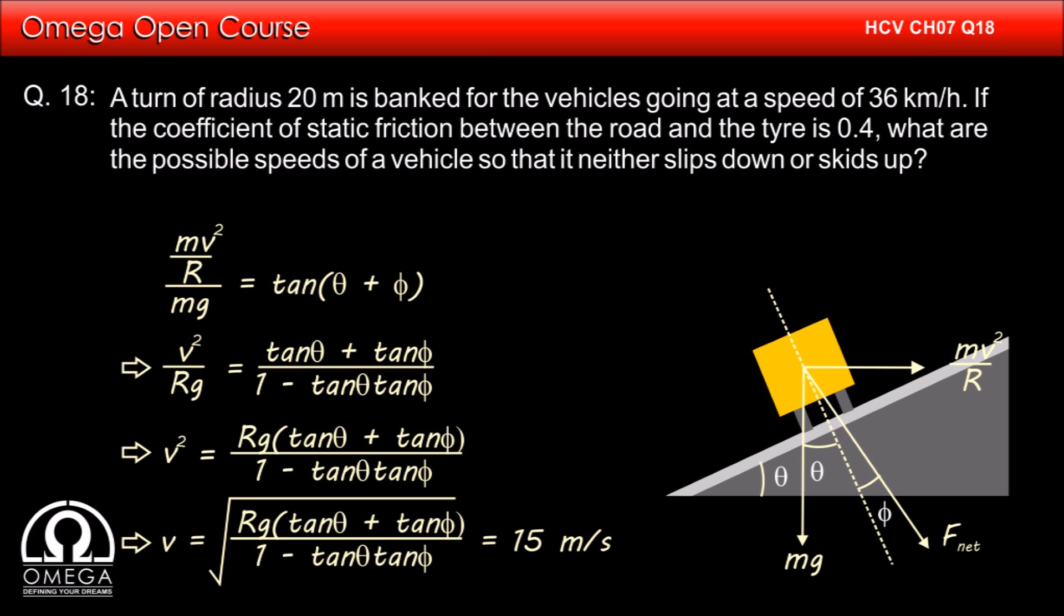Putting the values of RG, tan theta, tan phi and simplifying, we get V is equal to 15 m per second or 54 km per hour. This is the maximum speed beyond which the vehicle will start skidding up.